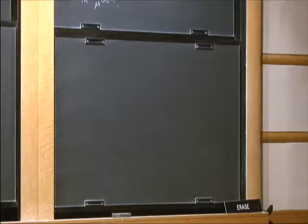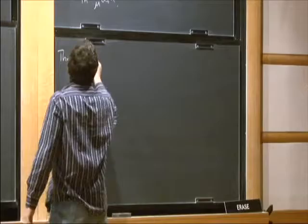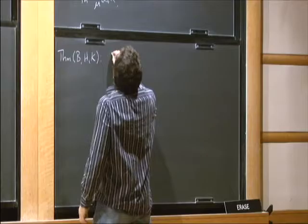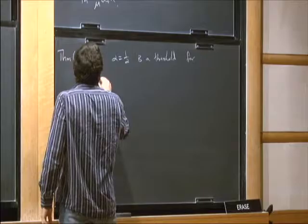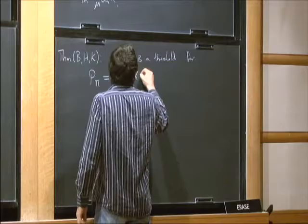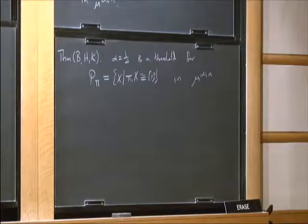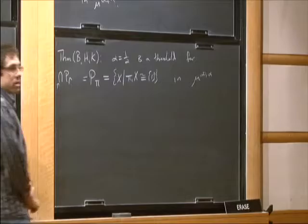That's the homological data. Then there's the question of when the fundamental group itself vanishes — and this is mostly what we were doing, the three people listed. That says the threshold for where the fundamental group actually vanishes is considerably farther along: α = 1/2 is a threshold for P_π, which is just the set of things where the fundamental group is trivial, equal to the intersection over all γ of P_γ.